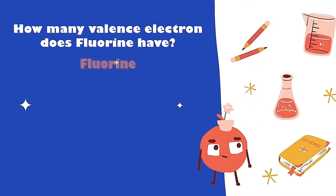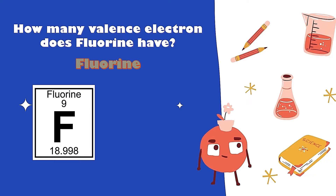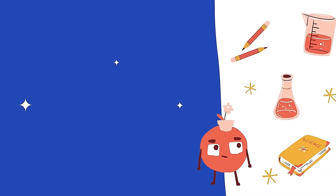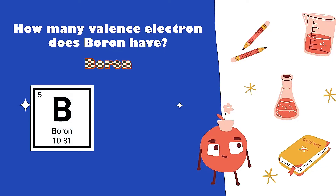How many valence electrons does fluorine have? Very good! It has 7 valence electrons since it belongs to group 7A, or the halogens group. How about boron? How many valence electrons does boron have? Very good! It's 3, since it belongs to group 3A.